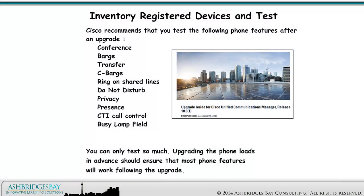Cisco recommends that you test the following phone features after an upgrade: Conference, Barge, Transfer, cBarge, Ring on Shared Lines, Do Not Disturb, Privacy, Presence, CTI Call Control, and Busy Lamp Field. You can only test so much. Upgrading the phone loads in advance should ensure that most phone features will work following the upgrade.